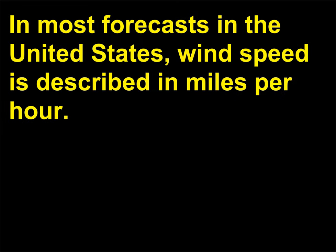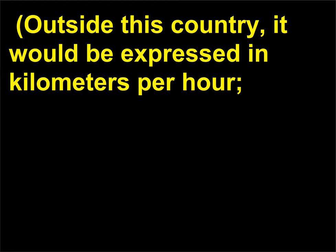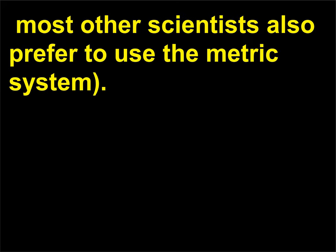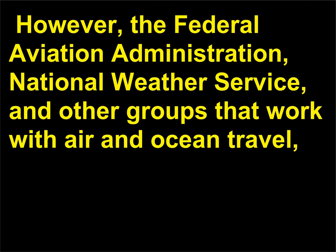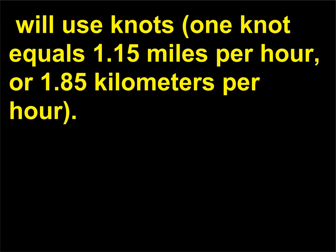In most forecasts in the United States, wind speed is described in miles per hour. Outside this country, it would be expressed in kilometers per hour. Most other scientists also prefer to use the metric system. However, the Federal Aviation Administration, National Weather Service, and other groups that work with air and ocean travel will use knots — one knot equals 1.15 miles per hour, or 1.85 kilometers per hour.